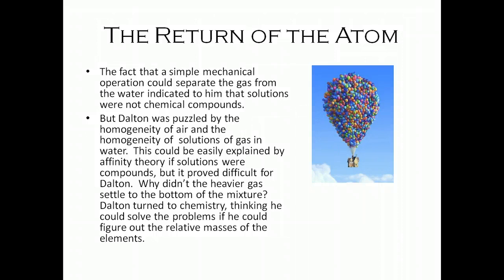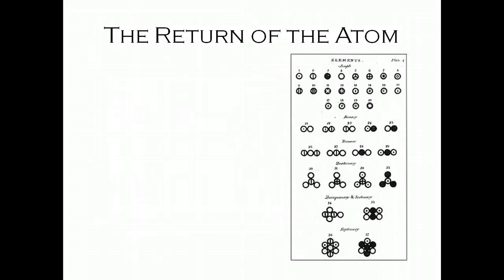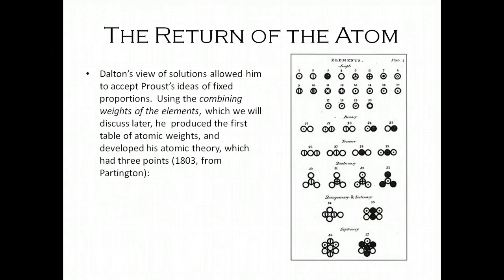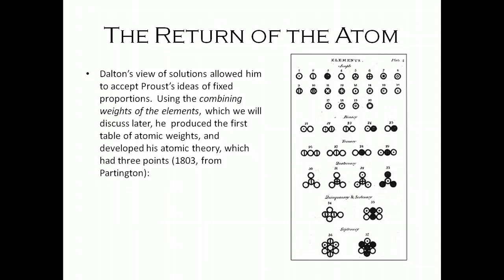He turned to chemistry, thinking he could solve the problems if he could figure out the relative masses of the elements. He was coming totally from outside — totally different problem in his mind. He's worried about gases and what's going on with air, and it leads him to study chemistry and the masses of elements. Dalton's view of solutions allowed him to accept Proust's idea of fixed proportions. Using something called the combining weights of the elements, he produced the first table of atomic weights and developed his atomic theory, which had three points.